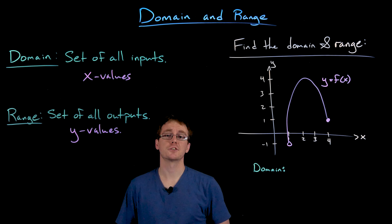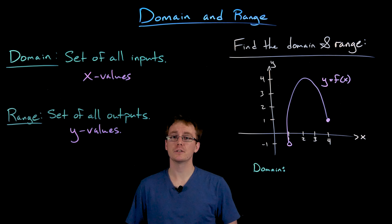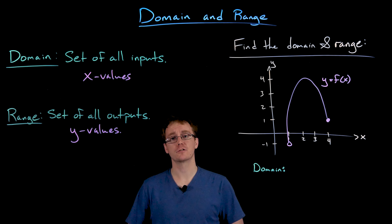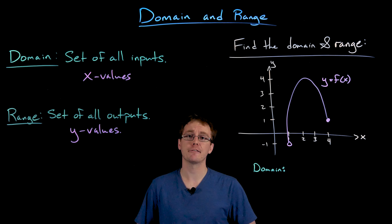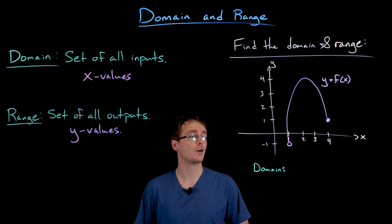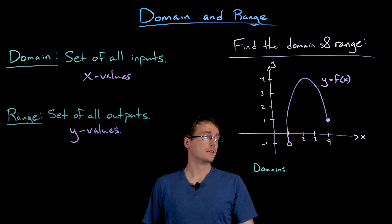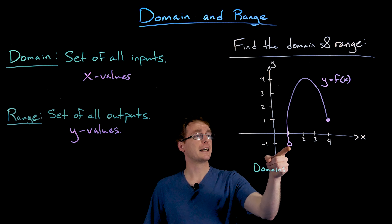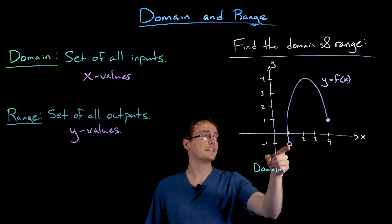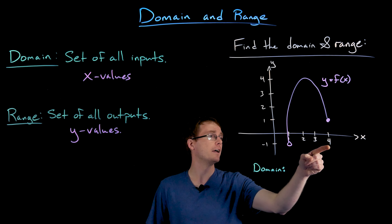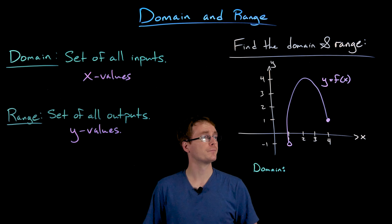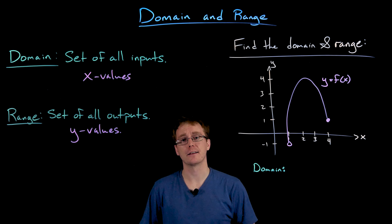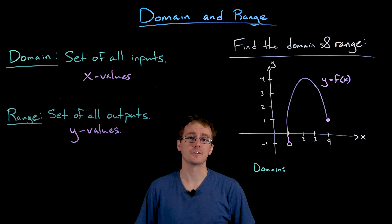Let's get started with the domain of the function — the set of all inputs or x values. All we have to do to find the domain from the graph is look at all the points included on the graph and determine what x values are covered. Looking at our graph, we can see the smallest x value we get close to but don't actually hit is x equals positive 1, and the farthest right x value we obtain occurs at x equals 4. We also need to include all x values in between those two.